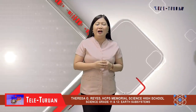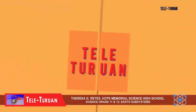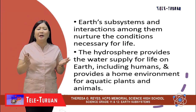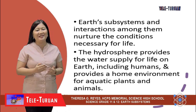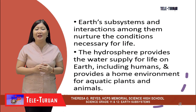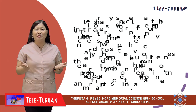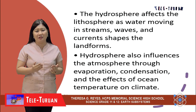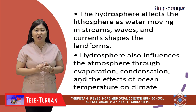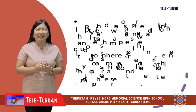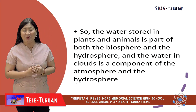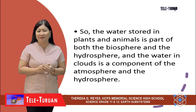How do Earth's interconnected subsystems overlap? Earth's subsystems and interactions among them nurture the conditions necessary for life. The hydrosphere provides the water supply for life on Earth, including humans, and provides a home environment for aquatic plants and animals. The hydrosphere affects the lithosphere as water moving in streams, waves, and currents shapes the landforms. The hydrosphere also influences the atmosphere through evaporation, condensation, and the effects of ocean temperature on climate. The water stored in plants and animals is part of both the biosphere and the hydrosphere, and the water in clouds is a component of both the atmosphere and the hydrosphere.